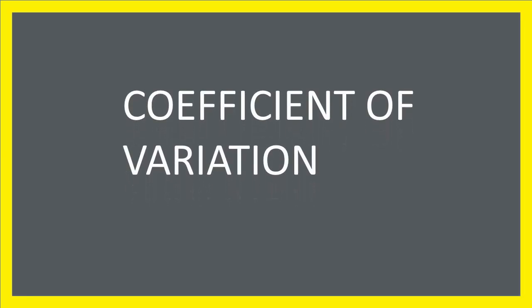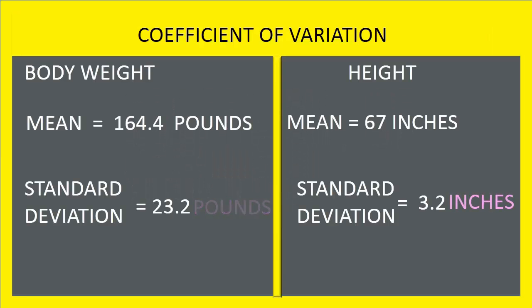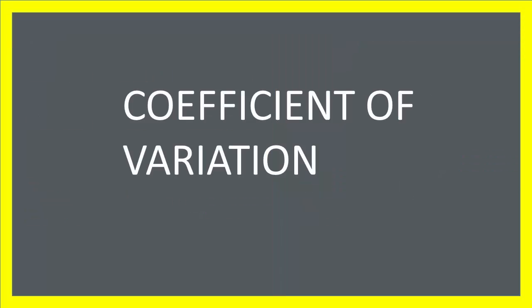For example, the first one is in pounds and the second one is in inches. Thus, we cannot compare their standard deviations of 23.2 pounds and 3.2 inches. In such cases, coefficient of variation is used to compare.